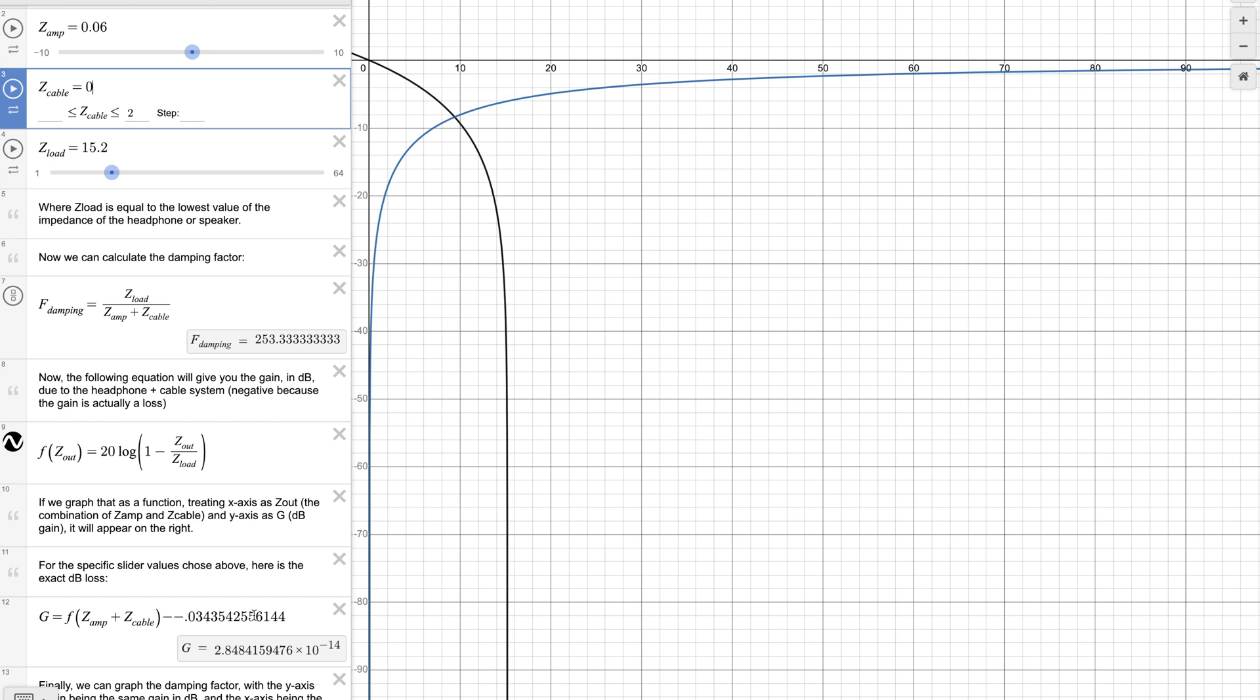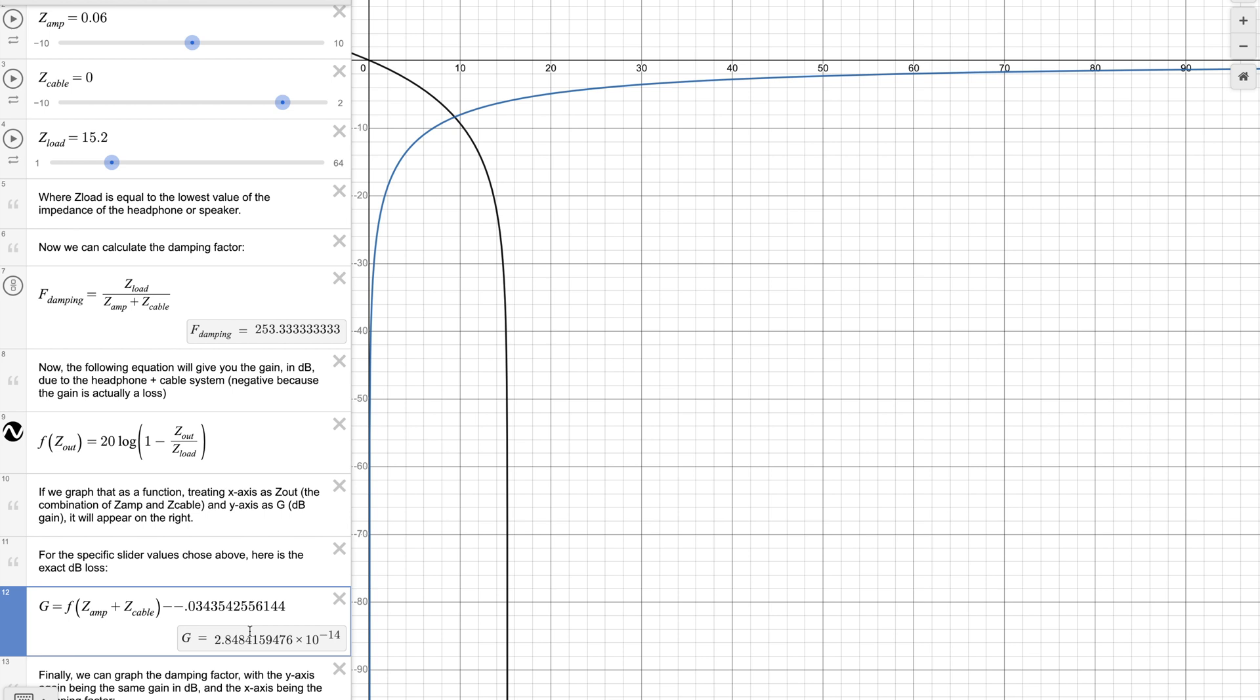As you can see, after subtracting the SPL drop of the amp itself, for a 0 ohm cable, we have an SPL drop of about 2.8 × 10⁻¹⁴, which is as good as 0. For G to be completely zero in this case, we would need infinite significant figures for the amplifier's SPL drop.